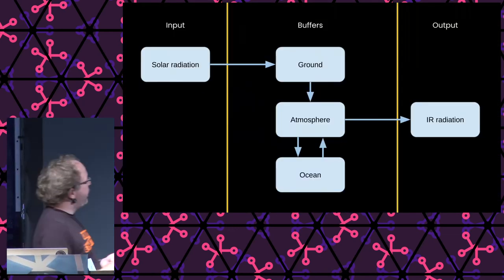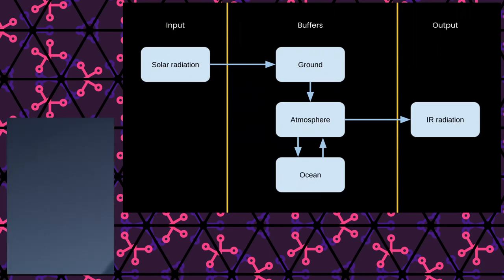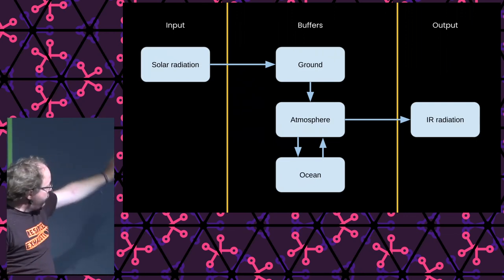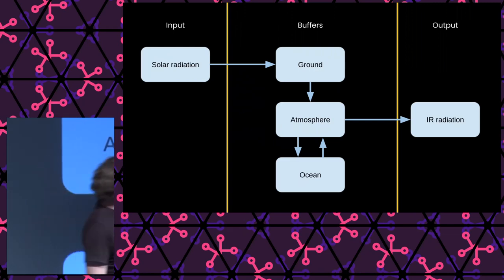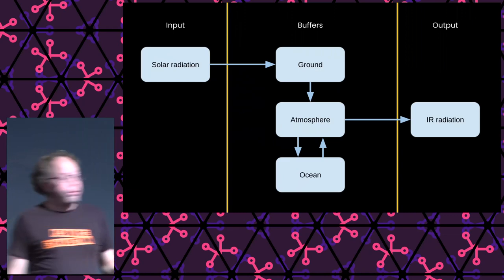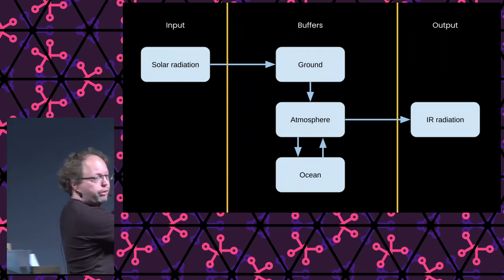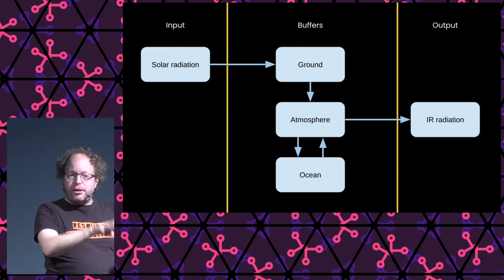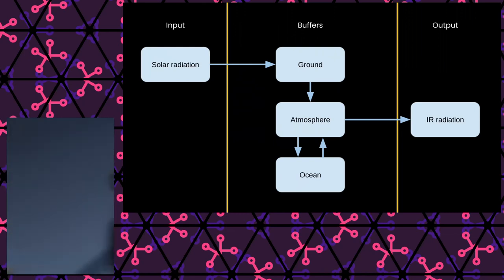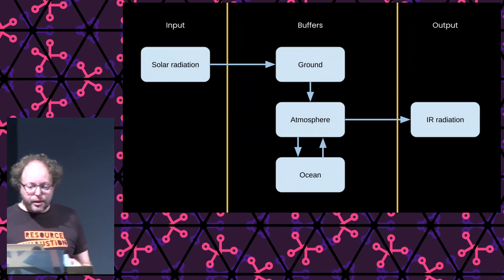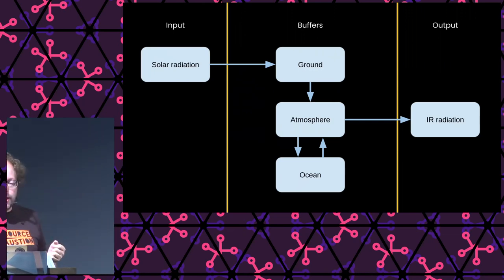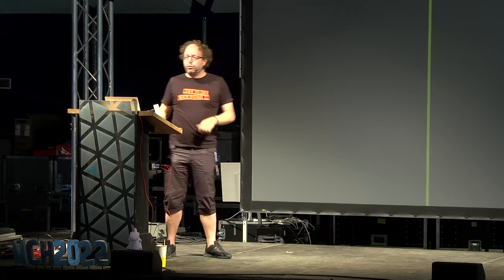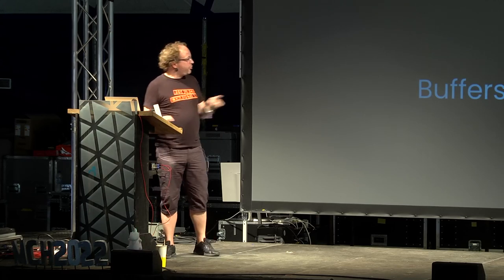We end up with a kind of systems diagram: solar radiation comes in, hits the ground, the ground warms up, it heats up the atmosphere, the atmosphere heats up the oceans — and there are more inputs, I'm simplifying. Eventually some of it escapes as infrared radiation. The input and the output are roughly the same, so our planet is in a nice thermodynamic equilibrium. The main question becomes: how big are the buffers? How much energy are we storing at any given point in time? That's actually the crux of a lot of what we're doing in climate science these days.